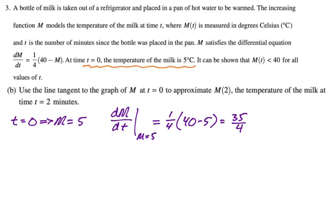Let's write our tangent line. So the input is time and the output is m of milk. So we're going to do our tangent line will be y minus 5 equals our slope 35 over 4, the quantity t minus 0. You could simplify that, but you don't really need to. That's the equation of the tangent line.